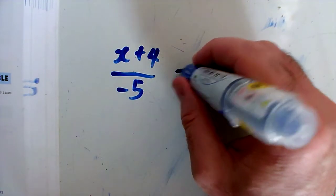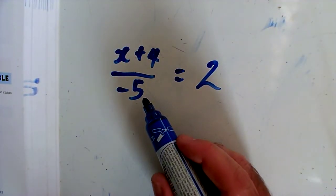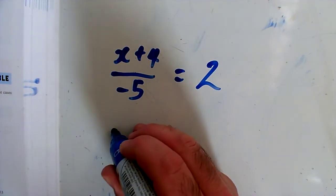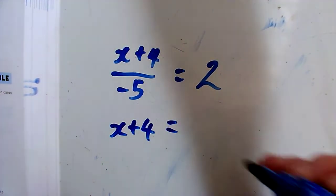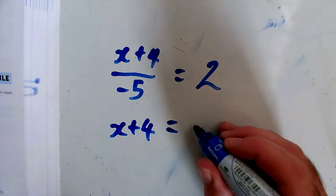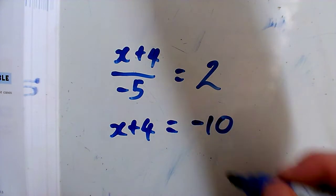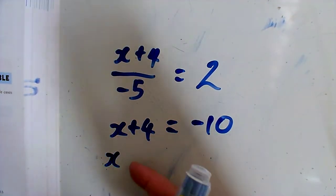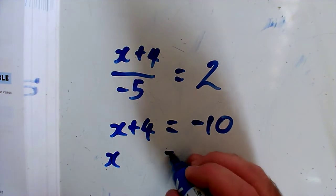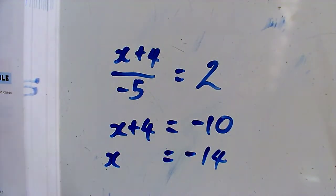Question K: x plus 4 over minus 5 equals 2. I'm going to get rid of the fraction by multiplying by minus 5, so I just get the x plus 4 on top. Multiplying both sides by minus 5, x plus 4 equals minus 10, since 2 times minus 5 is minus 10. Taking away 4 from both sides, x equals minus 14.